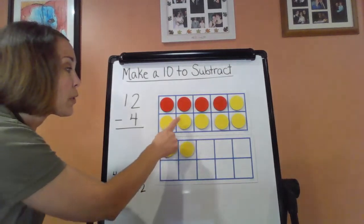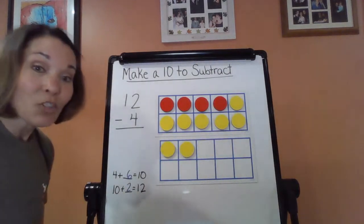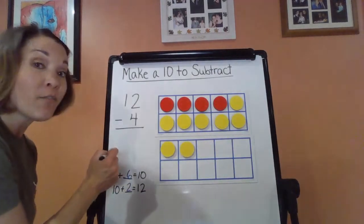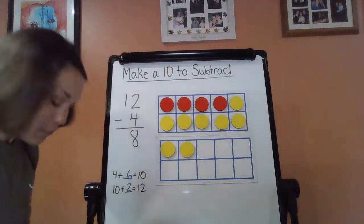So I wonder if I have 8 over here. 1, 2, 3, 4, 5, 6, 7, 8. So what that's saying is 12 minus 4 equals 8. That's my difference.